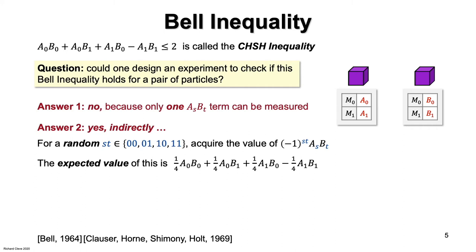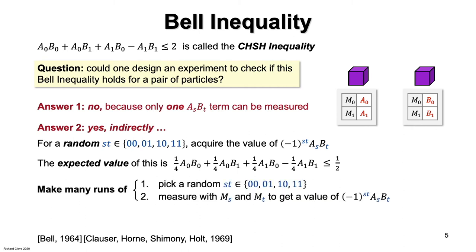It's the left side of the CHSH inequality divided by four. So we know from the CHSH inequality that this expectation is upper bounded by one half.